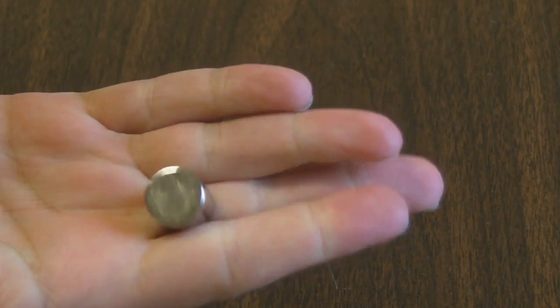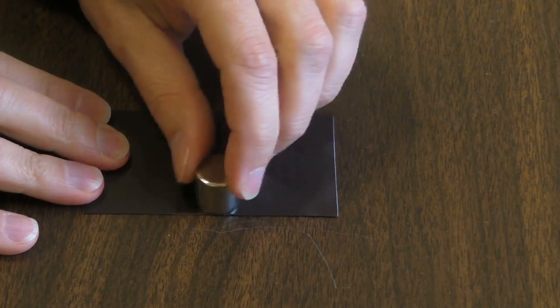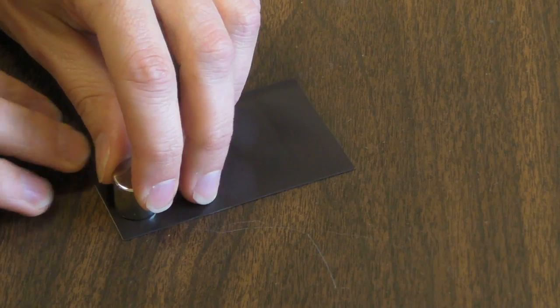Now if I take a strong neodymium magnet like this 5 1⁄8 inch cylinder and rub it all across the surface of this magnet, I'll ruin it.